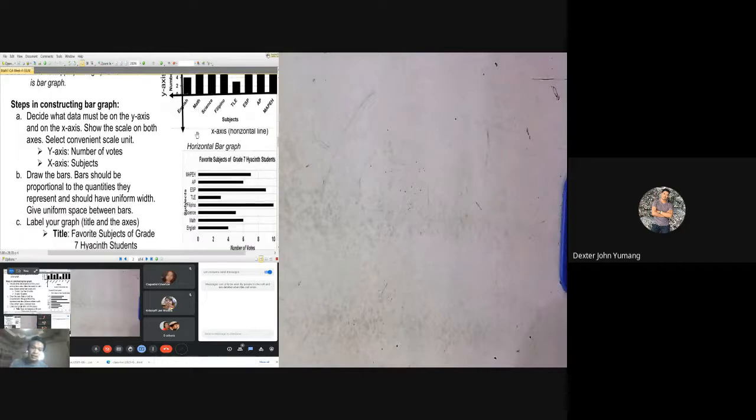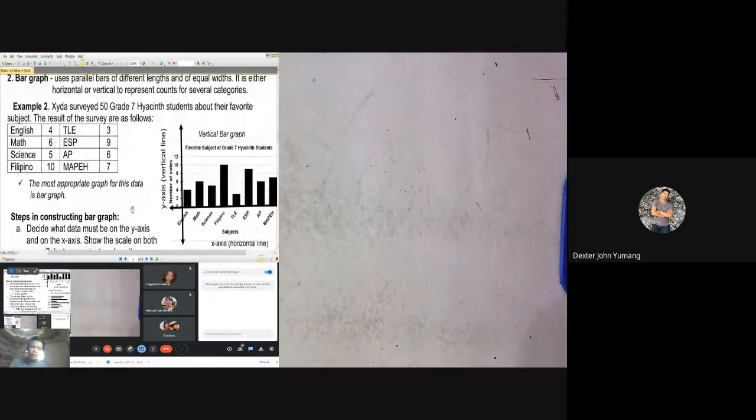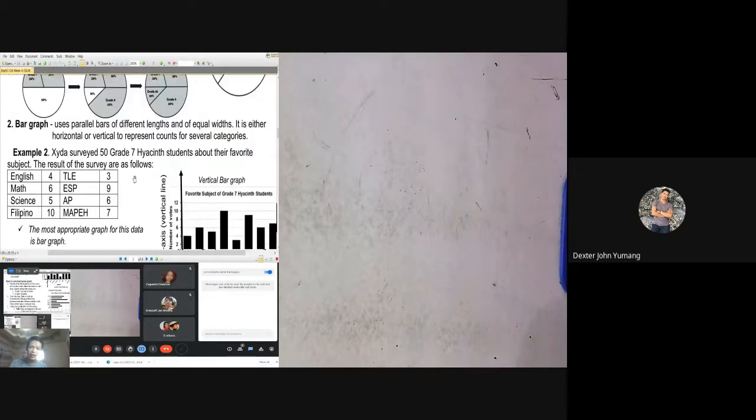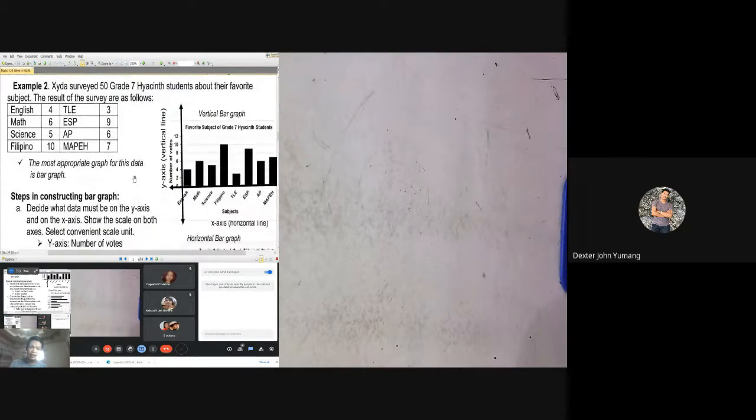The last one is we are going to make a title. Based on the given, for example, they surveyed 50 grade 7 Hyacinth students, that's our title. Grade 7 Hyacinth students favorite subject. That's the title. Let's start making or constructing example number 2, bar graph.